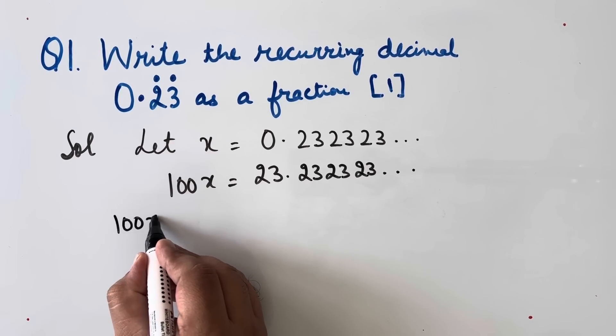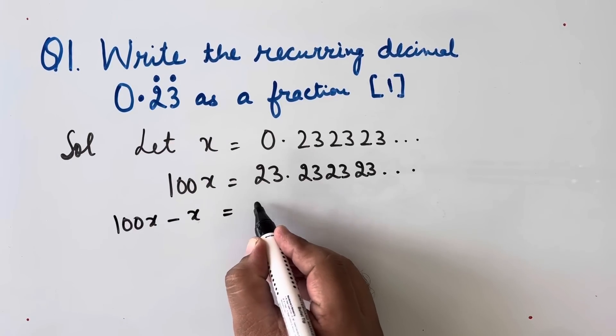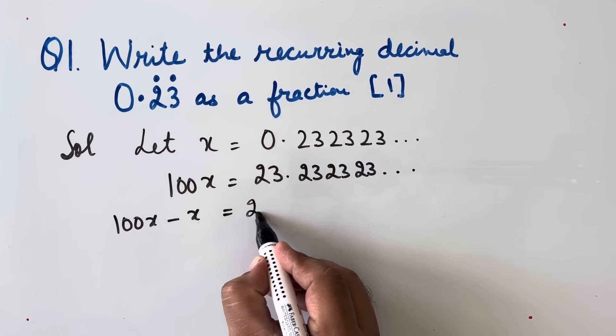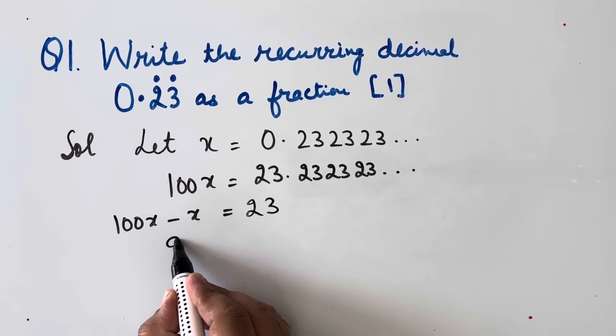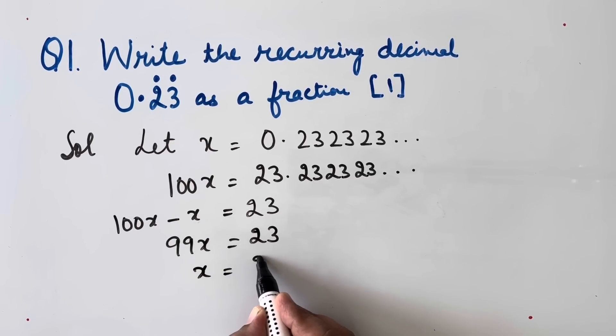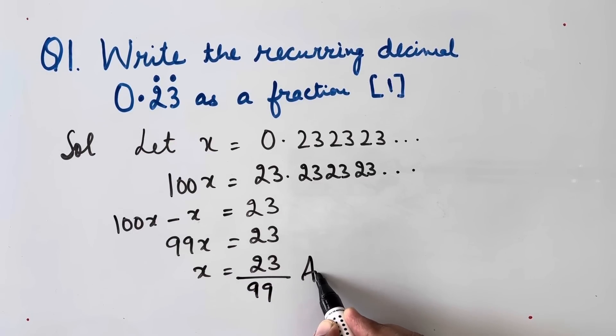Now 100x minus x is equal to, 23 minus this will be only 23. This will be 99x is equal to 23. So x will be equal to 23 by 99. This will be our answer.